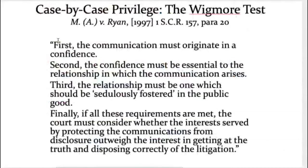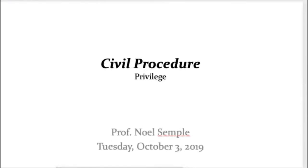Good evening everyone. Welcome back to Civil Procedure. We're going to start with the Grossman case, which is kind of the appetizer — it tells us about privilege and is a good review of the ethos and philosophy around disclosure and production in the Ontario rules. The main course is three big Supreme Court of Canada cases which outline three of the four types of privilege recognized in our common law system.